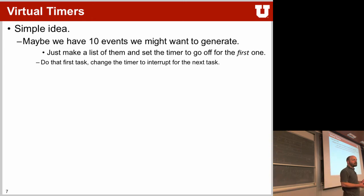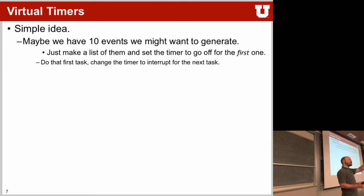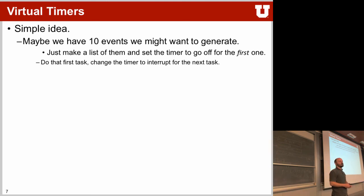The simple idea is: make a linked list of events ordered by their time of occurrence. Every element has a function handler to be called at a certain time. You take the first element out of the list, schedule a compare event for it; when that event fires you remove it from the list, look at the next event, schedule that, and so on. When somebody wants to add a new event, they insert it into the linked list at the correct time position.